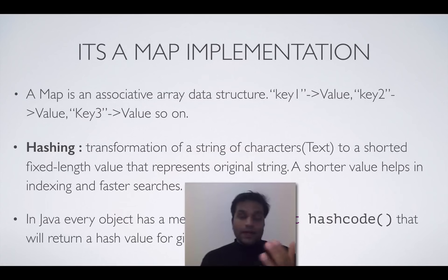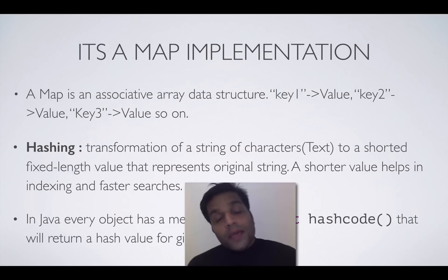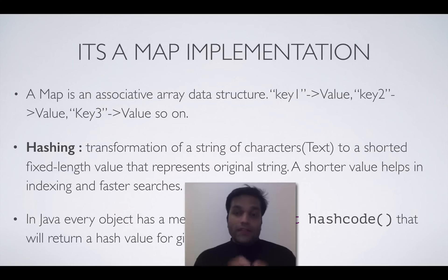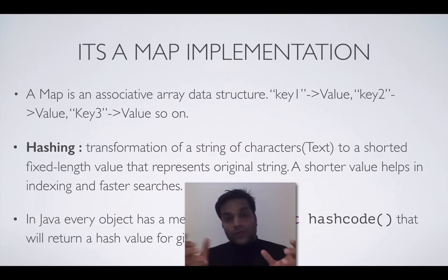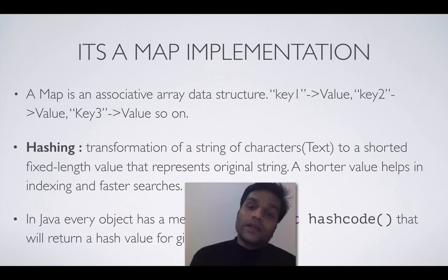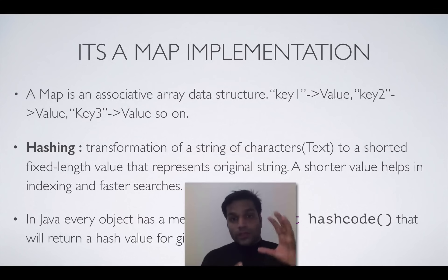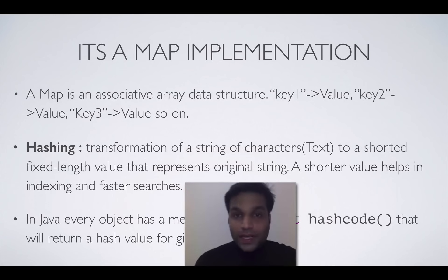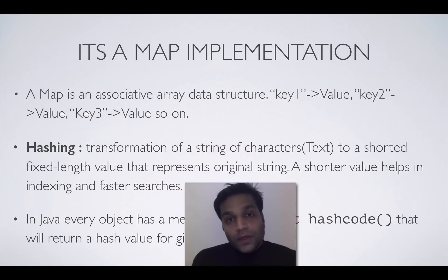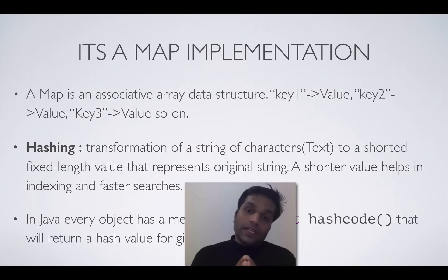The popular data structures are like lists, sets, and maps. Maps are basically associative arrays that let you store key-value associations — you can store a key against a value, and later look up the value using the key. This makes it one of the popular data structures in enterprise applications, where you can use it to represent big caches with a key and some large object as the value. You can also imagine a HashMap as a dictionary.